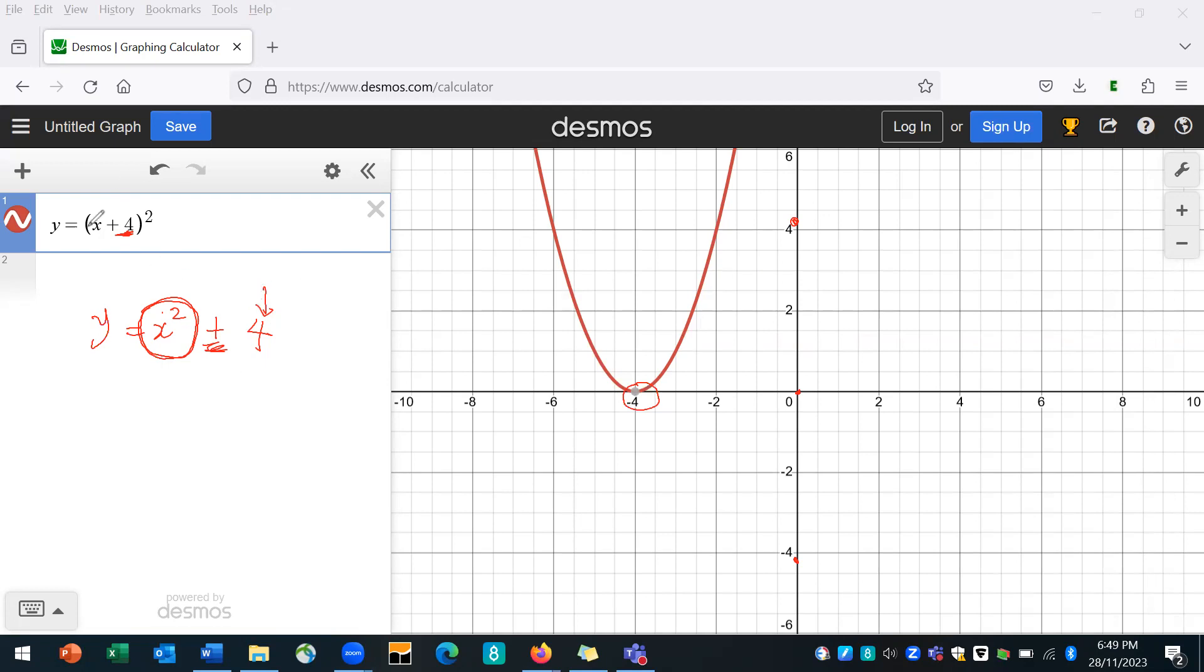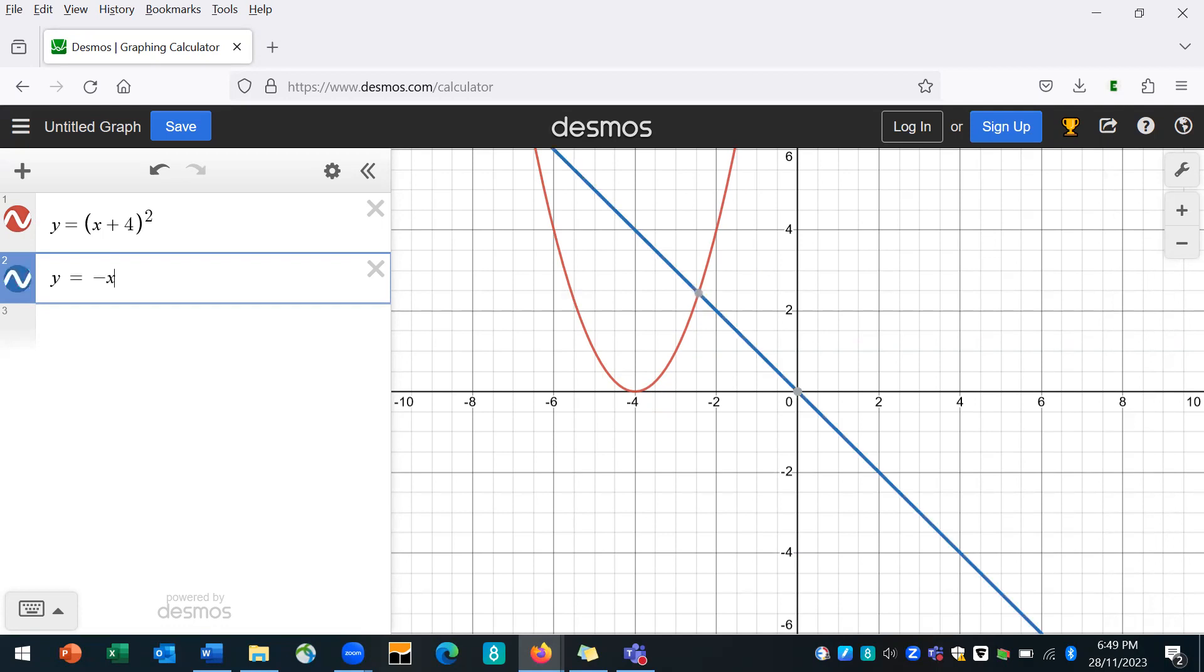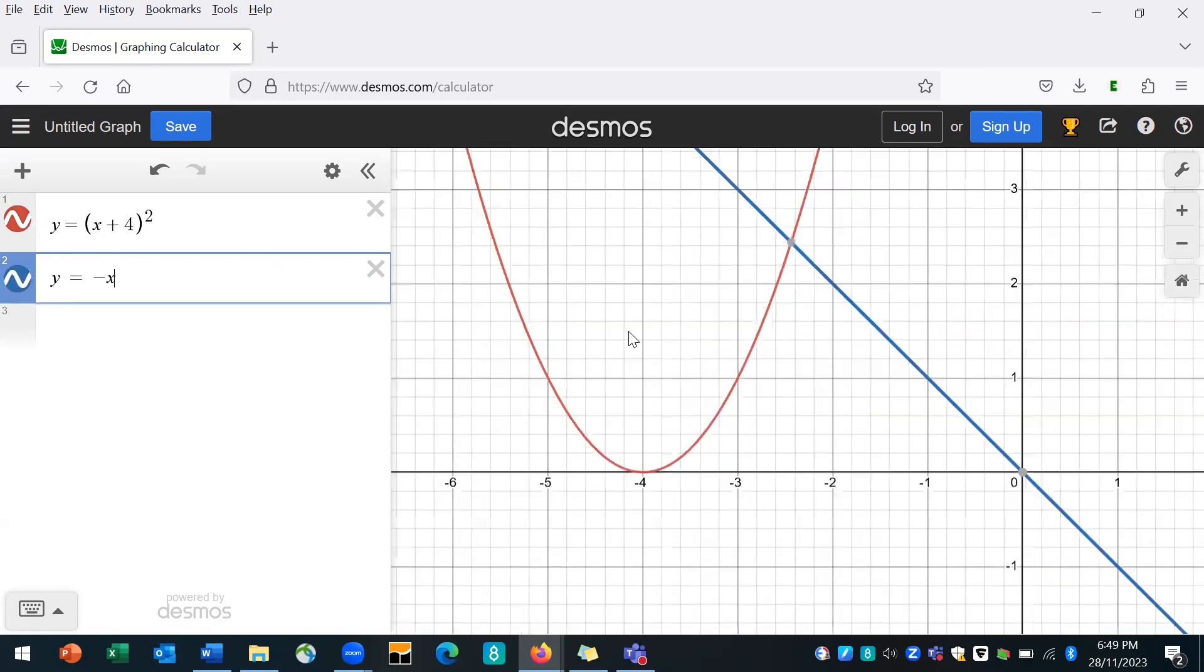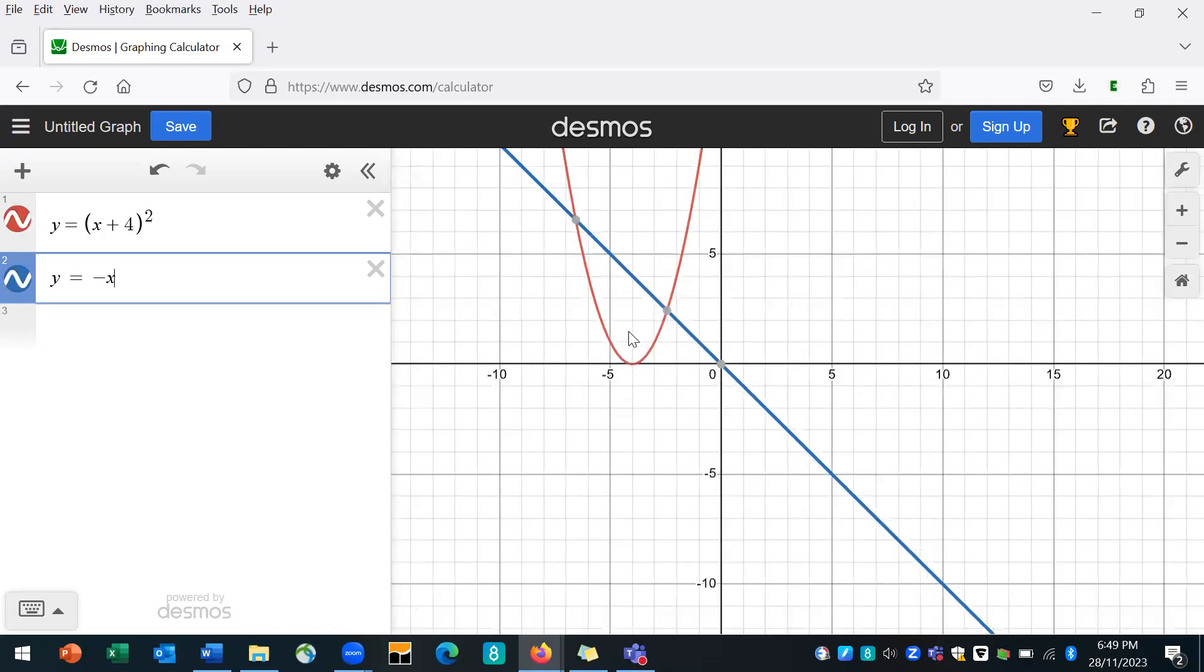So now I can have more than one function. I can have like two functions together, and that will help me then solve for the point where the two intersect. Let's say I have y equals minus x. Now I have those two functions. So this tells me that these two functions, their point of intersection will be this and that. So if I solve these two equations together, then I should have a solution that has x value that corresponds to that.